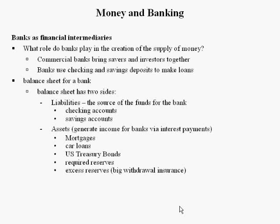I like to think of excess reserves as big withdrawal insurance. If you have a lot of excess reserves on hand and someone like Jed Clampett from the Beverly Hillbillies comes in and says 'I want my $24 million,' you can cover it. By law, Milburn Drysdale would have to keep 10% in reserve and could loan out as much as 90%. If Jed had money in a savings account, the bank could lend out 99%. Banks take the money in your savings and checking accounts and lend it out at higher interest rates, and the difference between the rate they pay you and the rate they earn from loans is their profit.